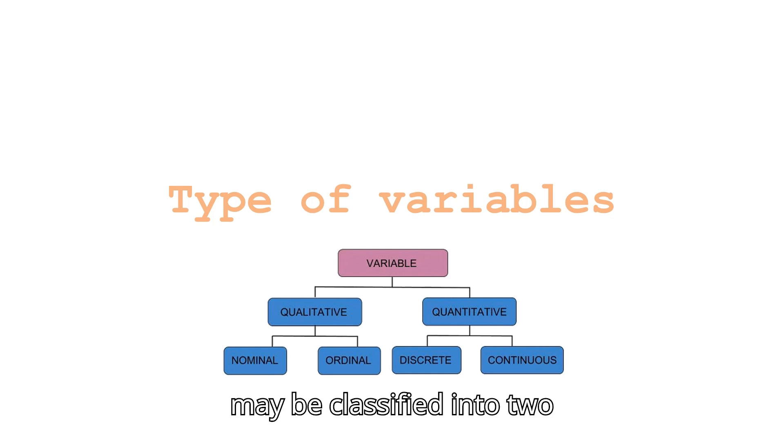A qualitative variable may be classified into two categories: nominal variables and ordinal variables. A quantitative variable is classified into two categories: continuous variables and discrete variables.